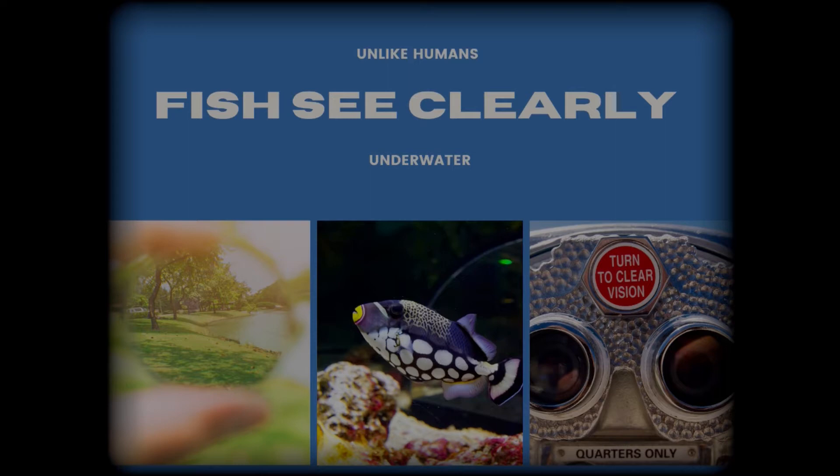Did you know that unlike humans, fish see clearly underwater. Their lens is spherical shaped and they can see red, green, and blue.